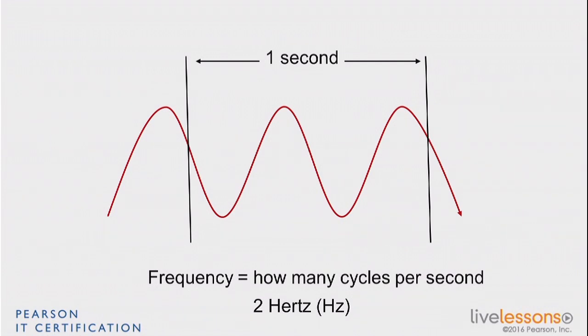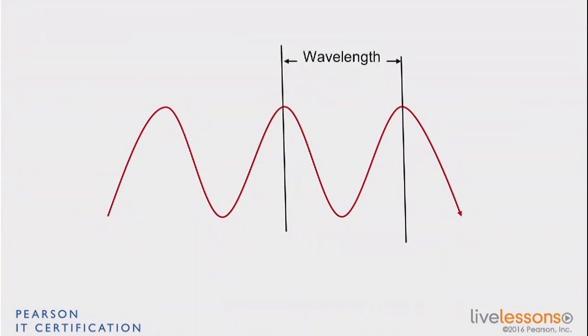But you can also look at that cycle and measure it in space. So imagine you take that wave and you freeze the picture. You don't think about time anymore. And you see that wave like you saw my rope and you froze the image at some point. And you want to measure the physical size of one cycle. This is called the wavelength. How long that cycle is, how long that wave is in space, that's the wavelength. That's another concept you need to understand.